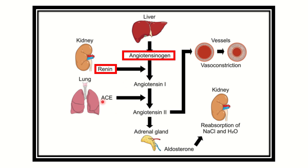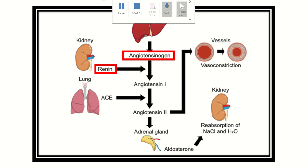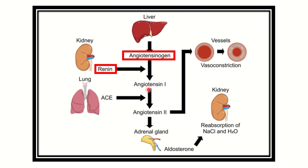Angiotensin one then circulates and when it goes to the lungs, angiotensin converting enzyme from the pulmonary capillary endothelium acts on angiotensin one and converts it into angiotensin two. Angiotensin two has different actions: it acts on the adrenal gland to release aldosterone, causing sodium chloride and water reabsorption from the kidney. Angiotensin two also acts on blood vessels and causes vasoconstriction.